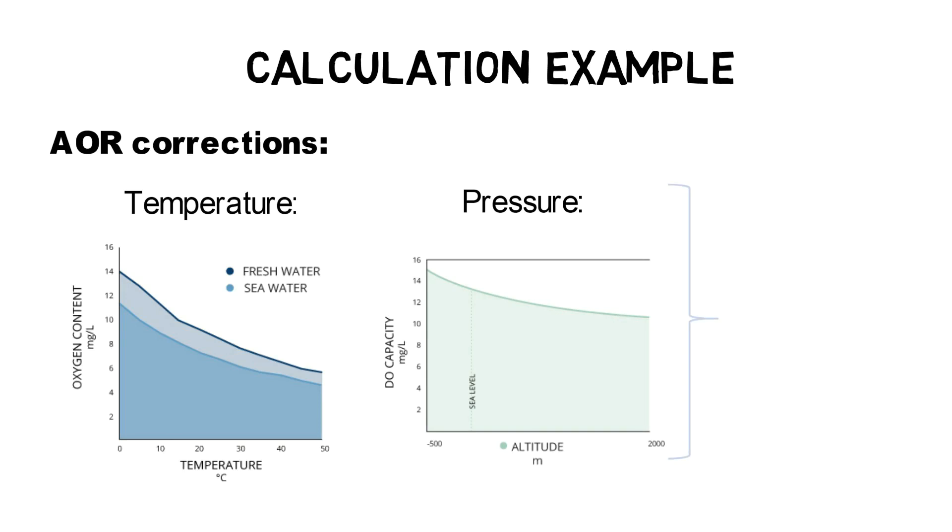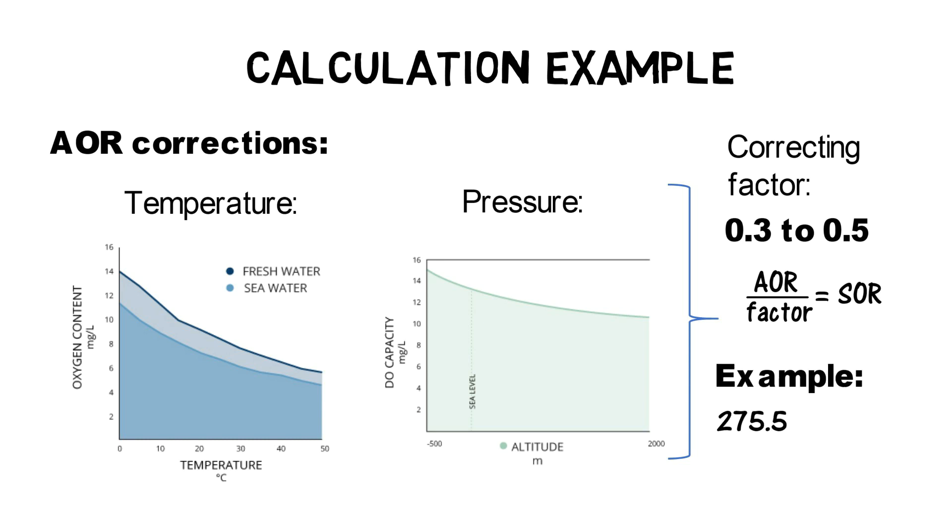For wastewater conditions, the correcting factor is usually between 0.3 and 0.5 depending on the aeration equipment. The corrected AOR value is known as the standard oxygen requirement, SOR. In our example, we use a factor of 0.4 which results in an SOR of 688 pounds O2 per day.